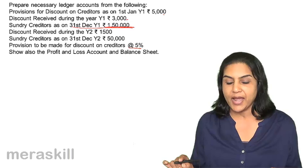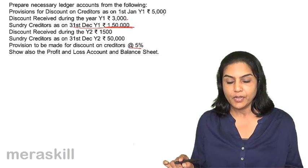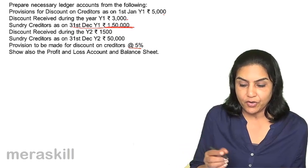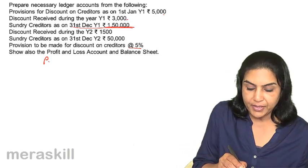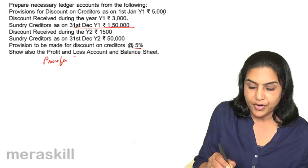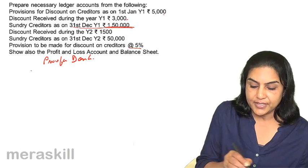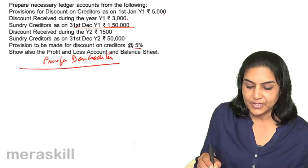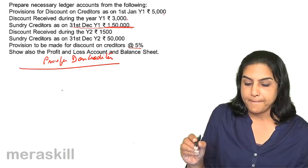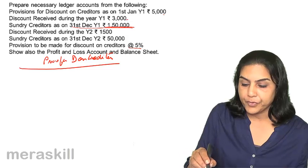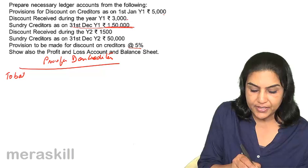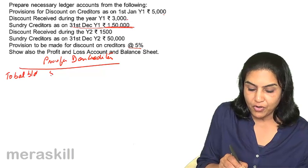Show also the profit and loss account and balance sheet. Let us see how the provision is created. In the provision for discount on creditors account for the first year, it has a debit balance — balance brought down of 5000.